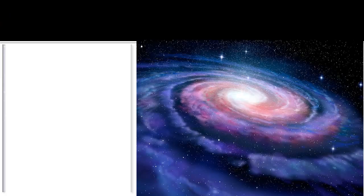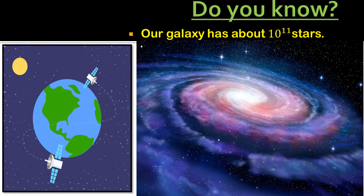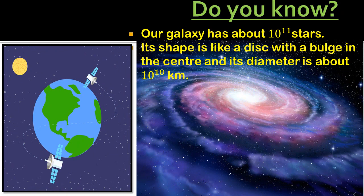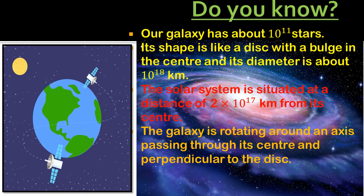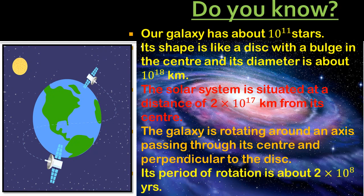Our galaxy has about 10 to the power 11 stars. Its shape is like a disc with a bulge in the center, and its diameter is about 10 to the power 18 kilometers. The solar system is situated at a distance of 2 × 10¹⁷ kilometers from the galaxy's center. The galaxy rotates around an axis passing through its center and perpendicular to the disc, with a period of rotation of about 2 × 10⁸ years.